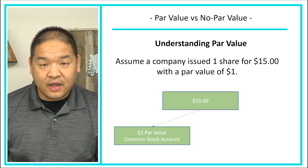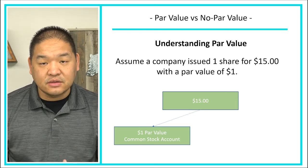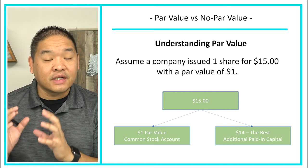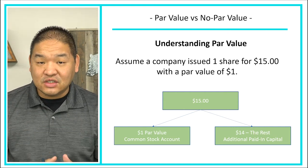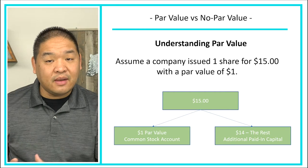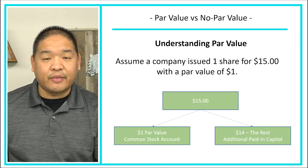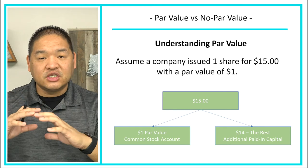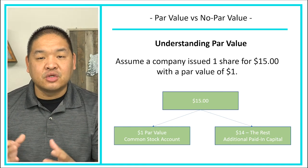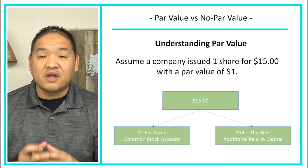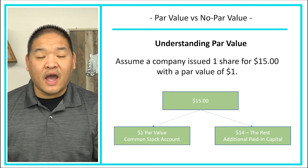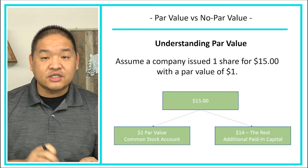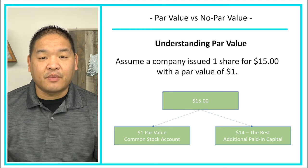The rest of the proceeds go into a new account called additional paid-in capital, or APIC. In our example, $14 will go into APIC. We'll do the full journal entry in another lesson, but the key concept is: with par value, the par value amount goes into common stock, and the remainder goes into additional paid-in capital.